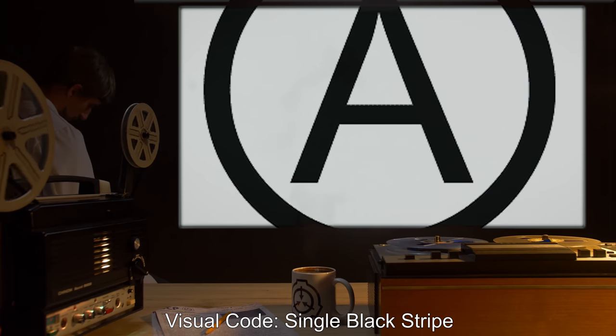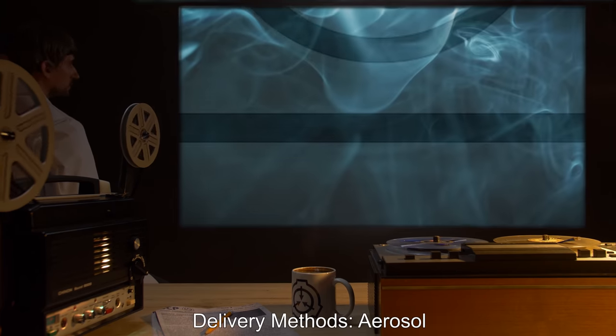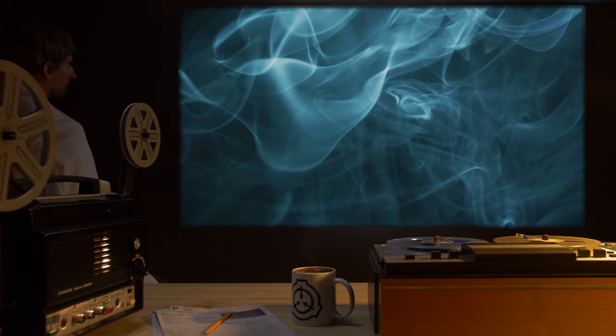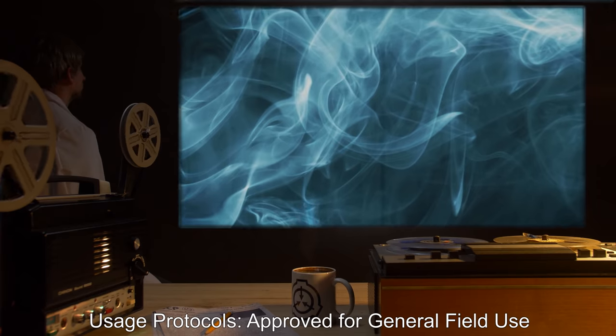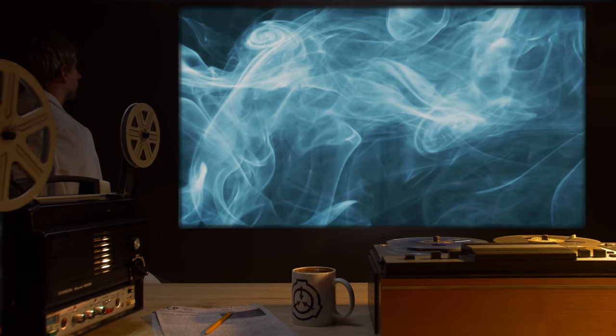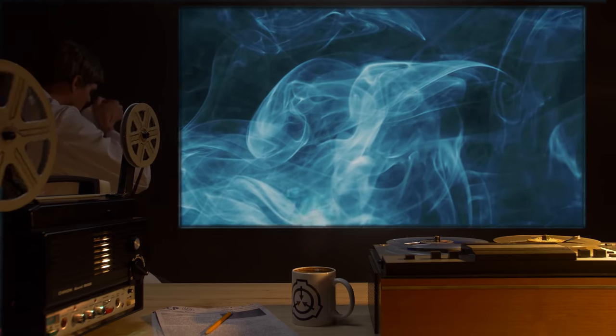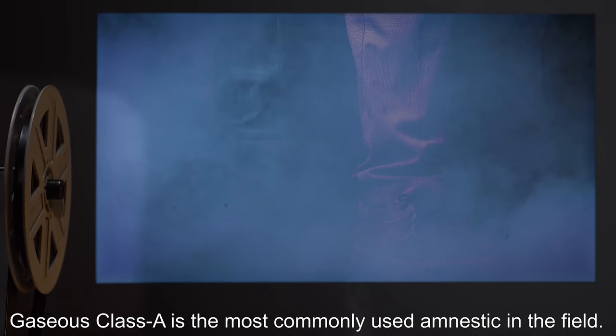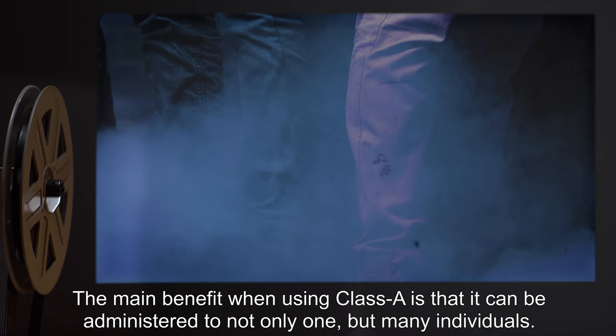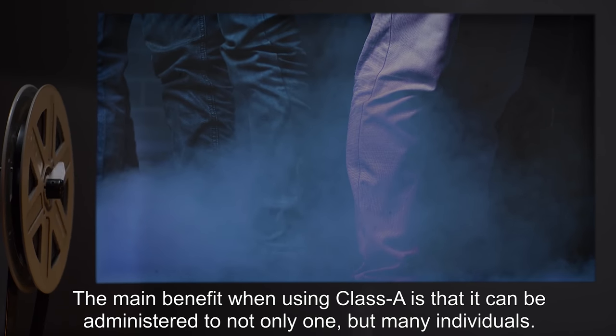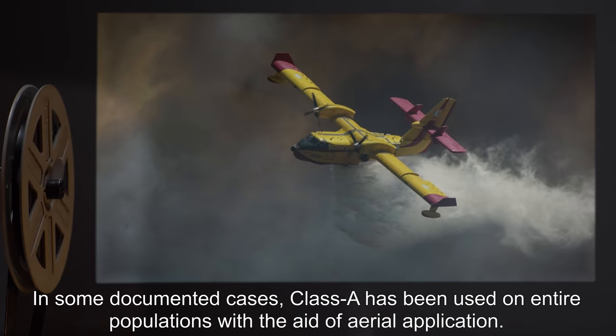Class A. Visual Code: Single Black Stripe. Clearance Use: Trained Level 1 and Above. Delivery Methods: Aerosol. Effectiveness: 6-12 Hours. Usage Protocols: Approved for General Field Use. Side Effects: Sedation, Headaches, Nausea. Detailed Description: Gaseous Class A is the most commonly used amnestic in the field. The main benefit when using Class A is that it can be administered to not only one, but many individuals.